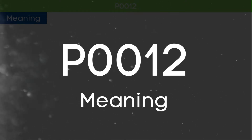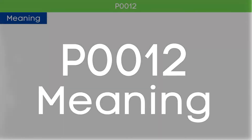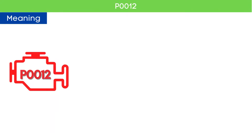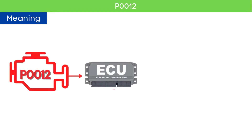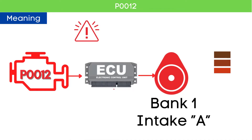First, let's understand what the P0012 code is. The P0012 code indicates that the ECM has detected that the camshaft timing for Bank 1, specifically the intake camshaft, is over-retarded.